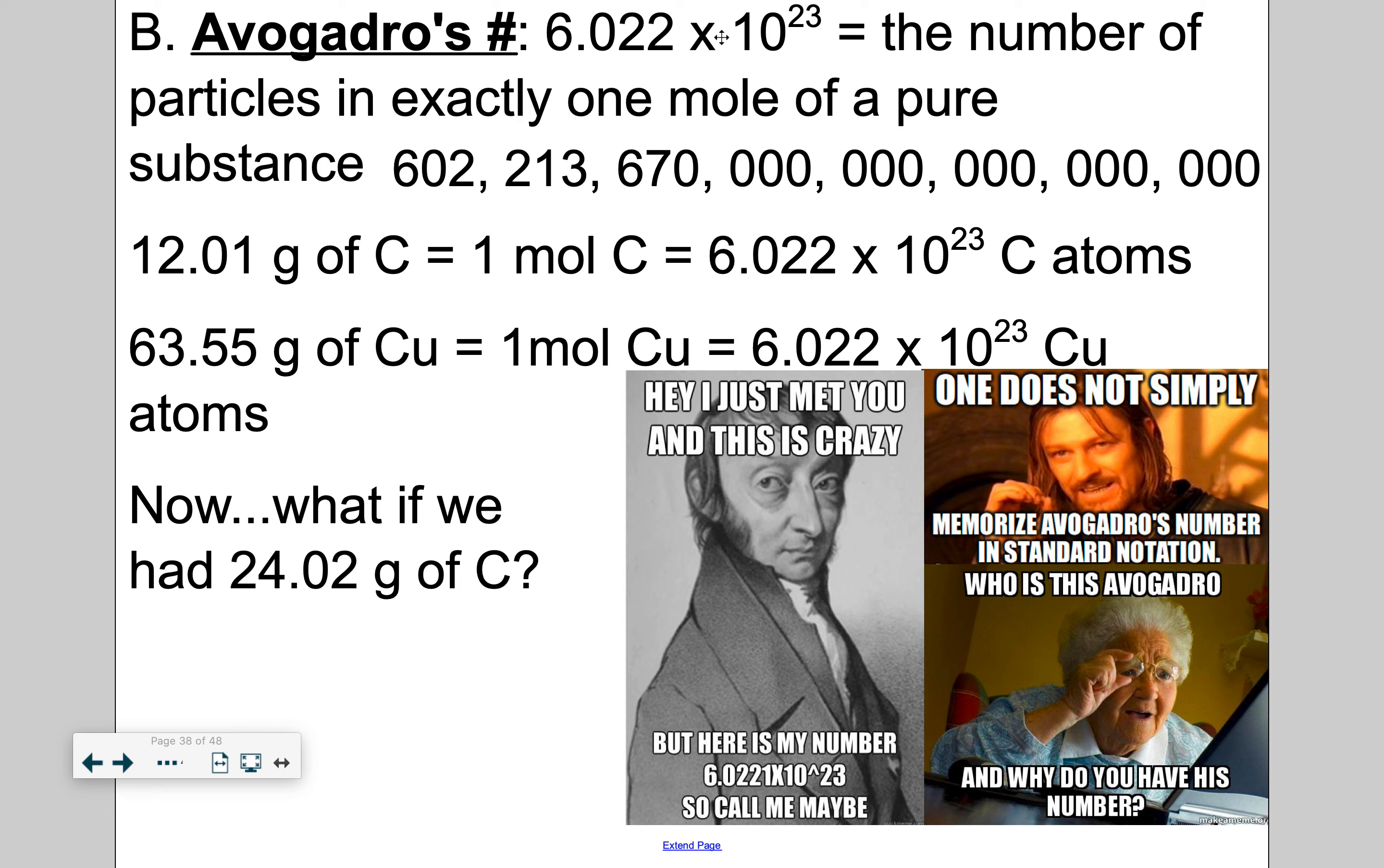This is a really big number. I mean, I took the liberty of putting it into standard notation, taking it out of scientific notation. So carbon, 12.01 grams of carbon is one mole of carbon, which means I would have 6.022 times 10 to the 23rd carbon atoms. Or copper, 63.55 grams of copper is one mole of copper, which is 6.022 times 10 to the 23rd copper atoms. So what if I had 24.02 grams of copper? Well, that's basically double this. So that means I would have two moles of carbon, and then whatever Avogadro's number is times two, that's how many atoms I would have.